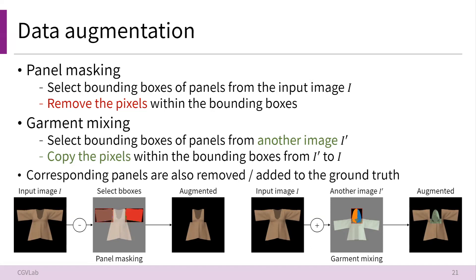To prevent overfitting, we introduce variations and increase the diversity of the training dataset by data augmentation. We propose two data augmentation techniques: panel masking and garment mixing. For panel masking, we randomly select bounding boxes of panels from the input image I and remove the pixels within the bounding boxes. For garment mixing, we select bounding boxes of panels from another image I', and copy the pixels within those bounding boxes from I' to I. These augmentation techniques effectively improve the robustness of the model.